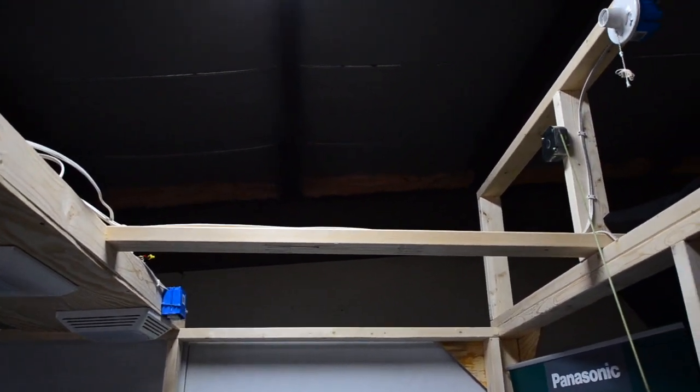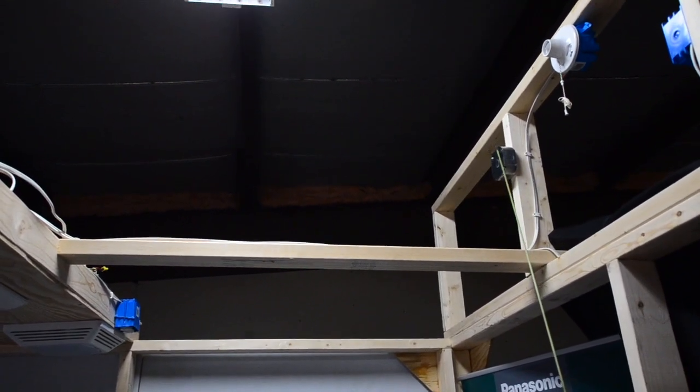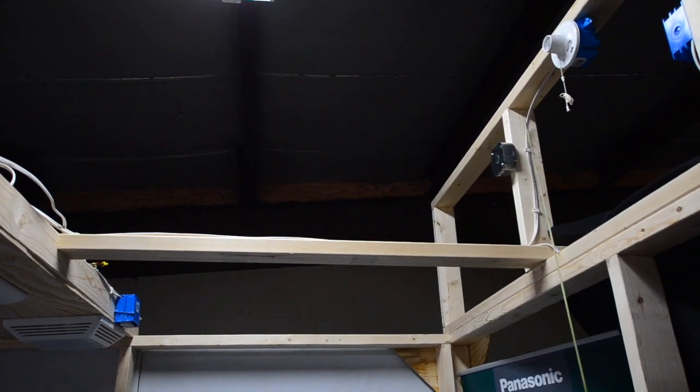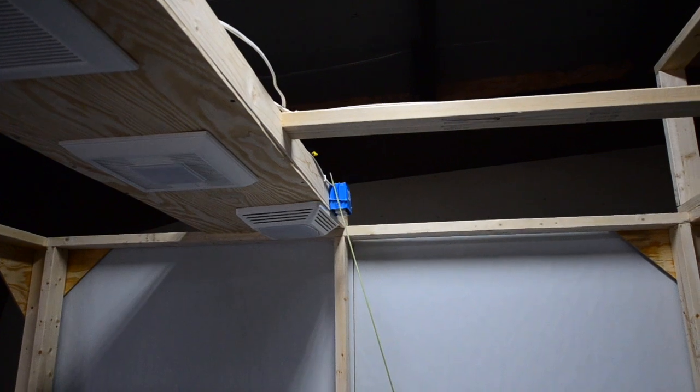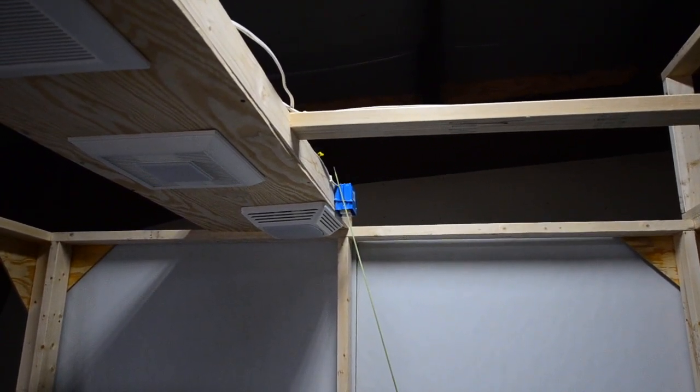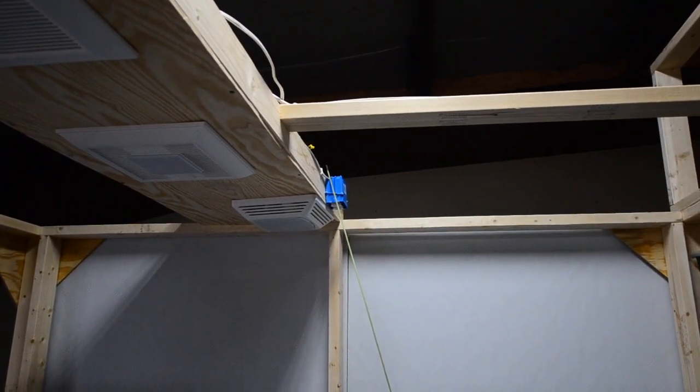Any kind of junction box. If you can figure out that there is constant power there. That would be a good spot. Or if you can get to the garage door opener. That is usually a really good spot to try to grab constant power out of.